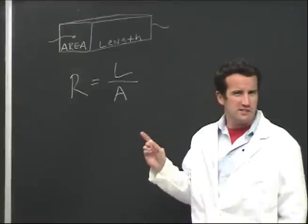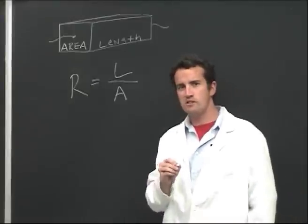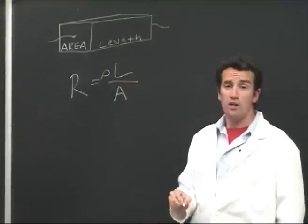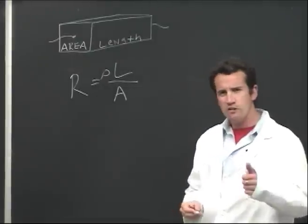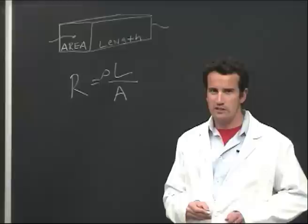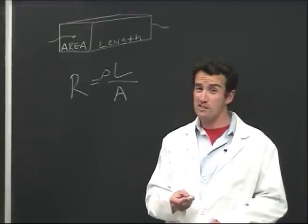But a resistance also depends on what the resistor is made of: its resistivity. We use the Greek letter rho for resistivity. A good conductor would have low resistivity and a poor conductor would have high resistivity.